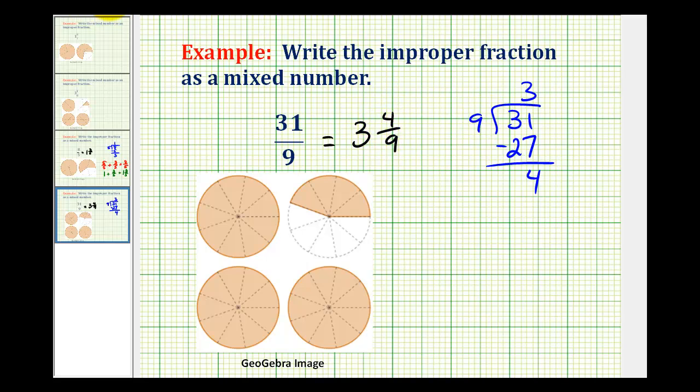Again, taking a look at the model for thirty-one-ninths, notice that every nine-ninths is equal to one. So we have nine, eighteen, twenty-seven-ninths, plus four-ninths, which does equal thirty-one-ninths.